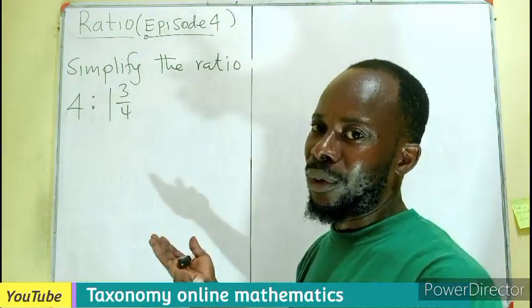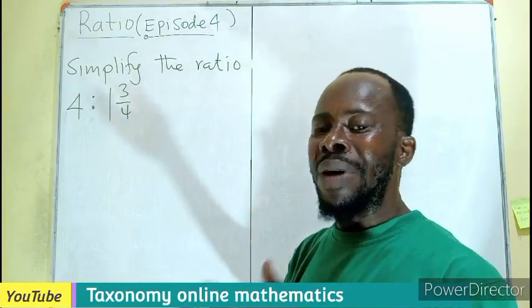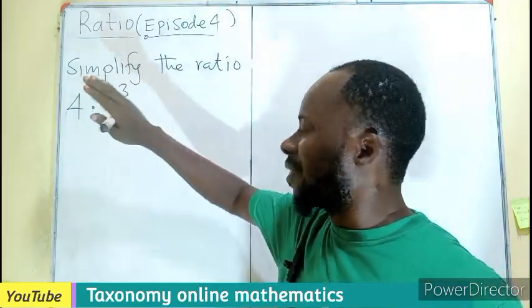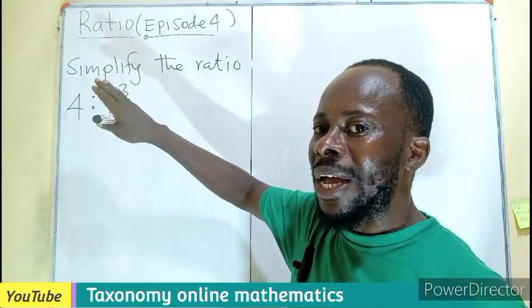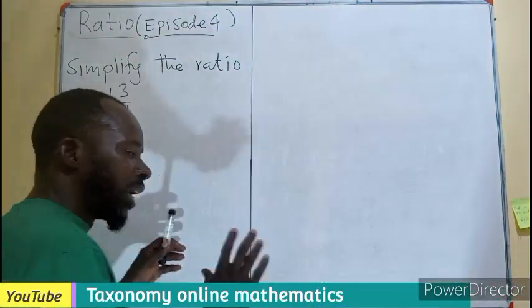It is already a ratio, but we have mentioned that ratios must be in the simplest form. This is not in the simplest form, so we need to simplify it. We are going to take it in two ways.